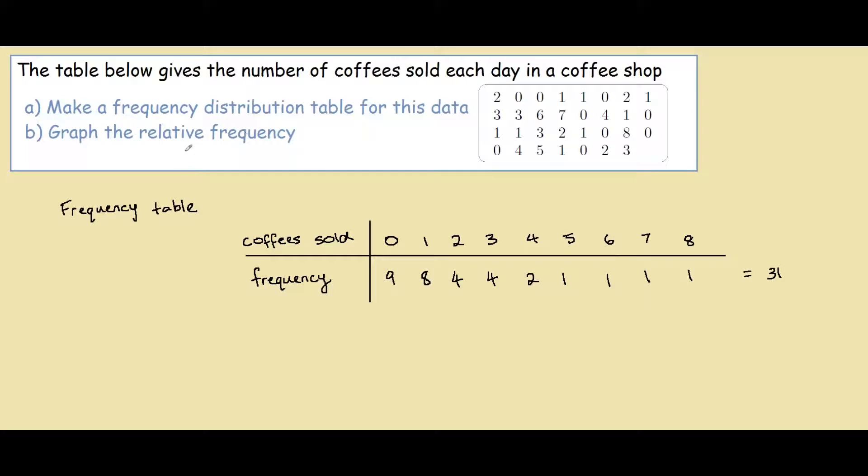And this is important to know for calculating the relative frequency in our next part of the question. So this is part A. For part B we want the relative frequency. So to find the relative frequency we do 9 divided by 31 which will give us 0.29. Likewise for the number 1 we do 8 divided by 31 gives us 0.26. And 4 divided by 31 gives us 0.13. The relative frequency is just a percentage of how many times the coffee was sold out of 31 data points.